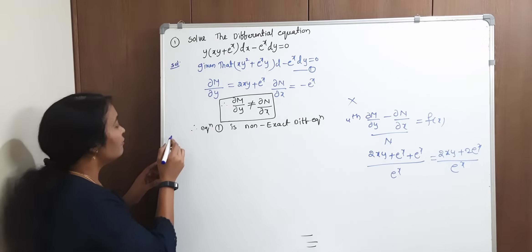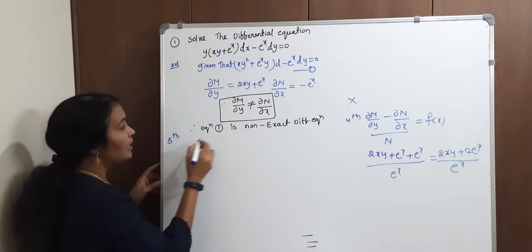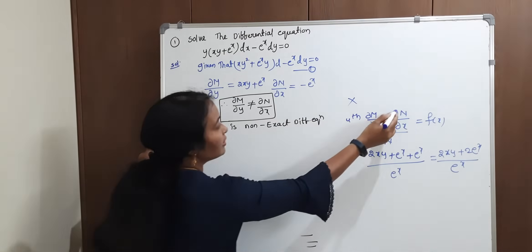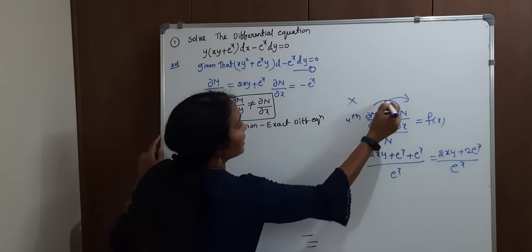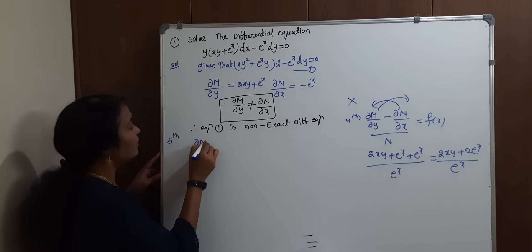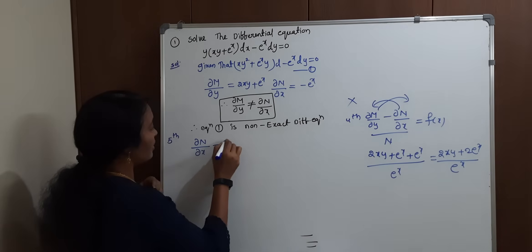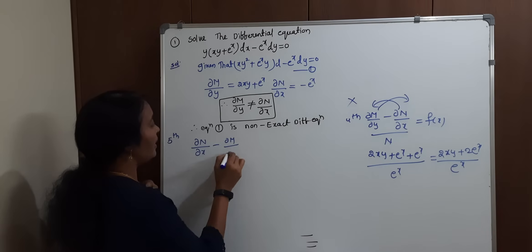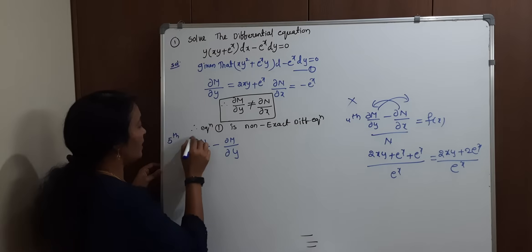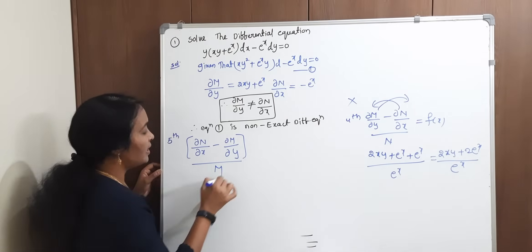Check the 5th method. What is our 5th method? Just reversing the order. We enter the formula: dou N by dou x minus dou M by dou y, divided by M.